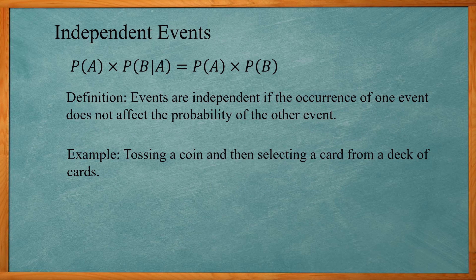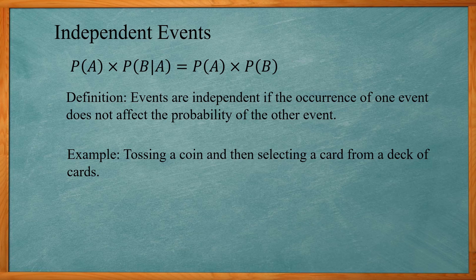Events are independent if the occurrence of one event does not affect the probability of the other. For example, tossing a coin and then selecting a card from a deck of cards — tossing the coin will not affect the probability of selecting any card. However, if you were selecting two cards from a deck without replacement, removing one card would affect the probability of the second card because there's one less card to choose from. In this case, tossing a coin and selecting a card are independent events.